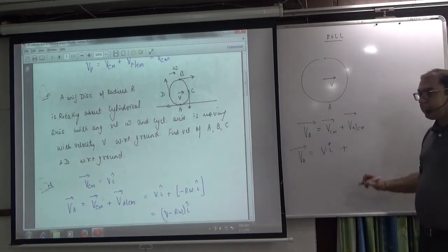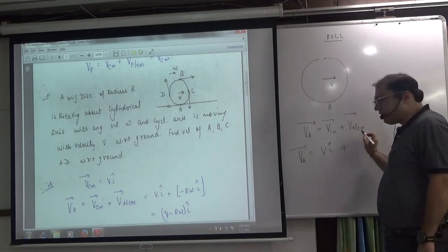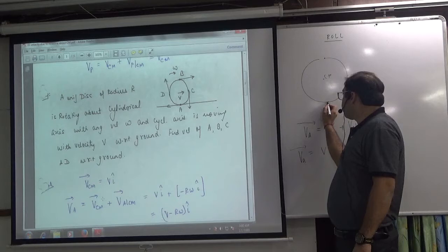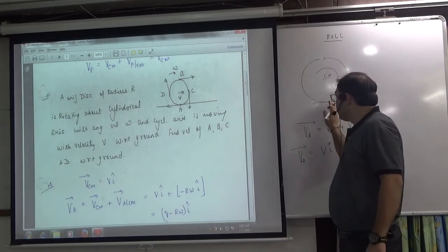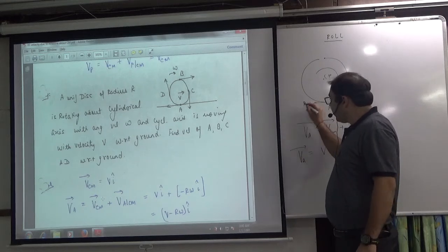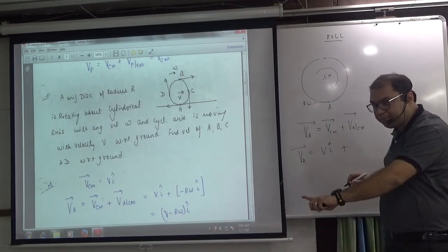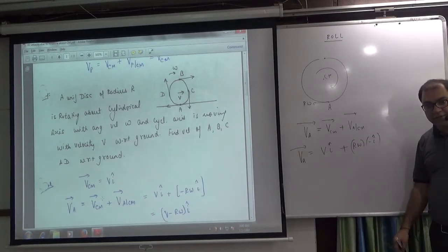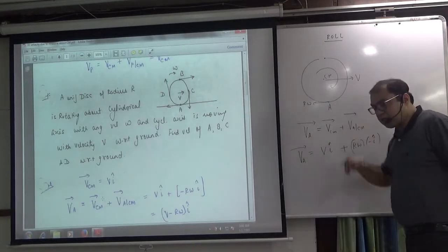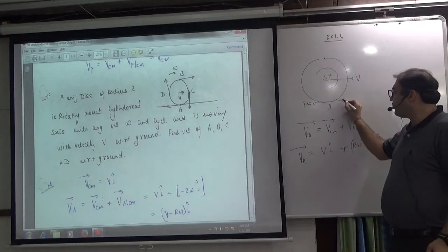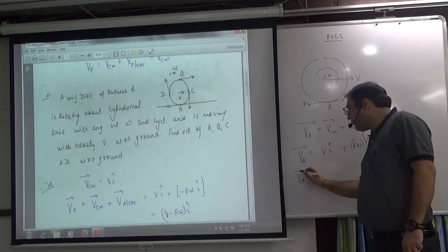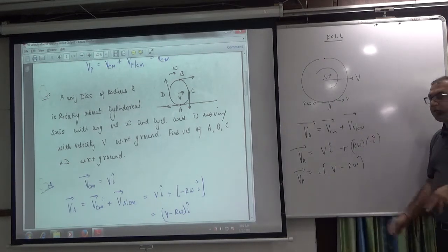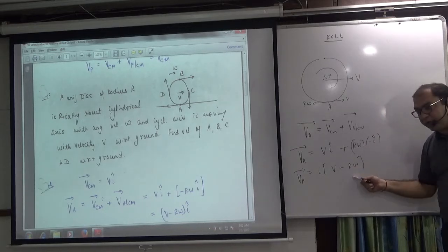Plus the A particle's rotation contribution. If the axis is center of mass, and it rotates — which way is it rotating? Imagine the body is rotating clockwise. Point A is at the bottom, on the left. The rotation effect is R-omega. Which direction? Minus I-cap, because the rotation effect at that point is going backward. So we have V I-cap minus R-omega I-cap. I-cap is common, so V_A = (V minus R-omega) I-cap. In pure rolling, V equals R-omega. This cancels. The answer is zero.